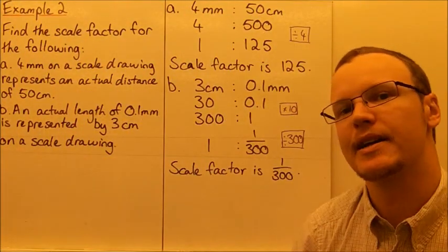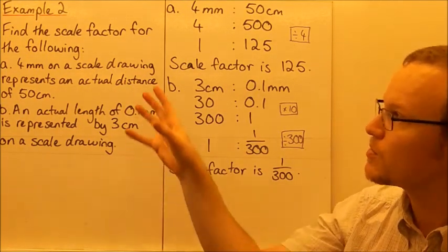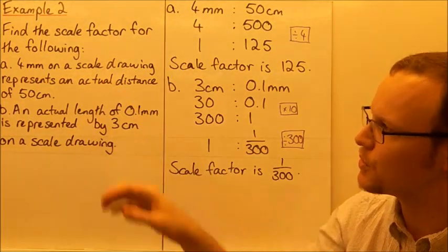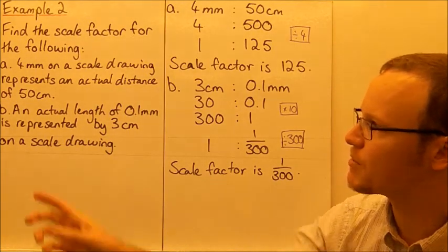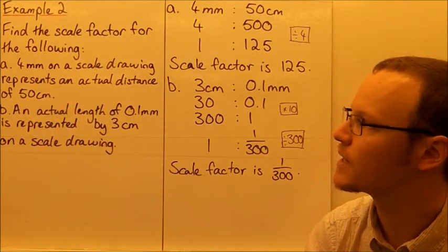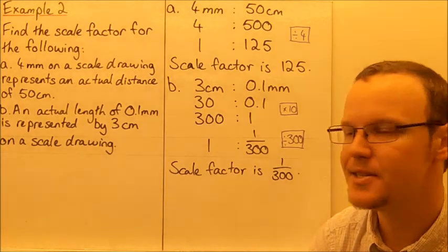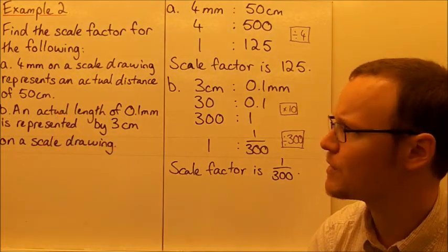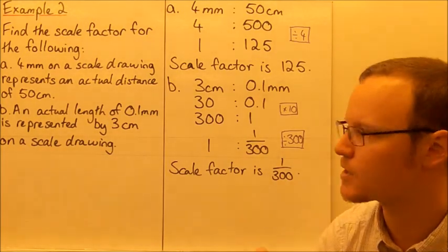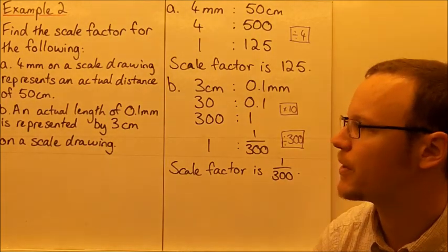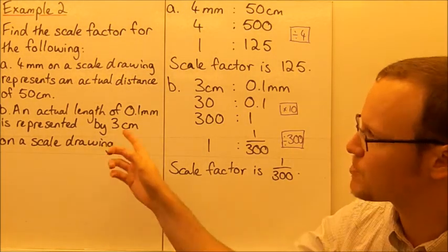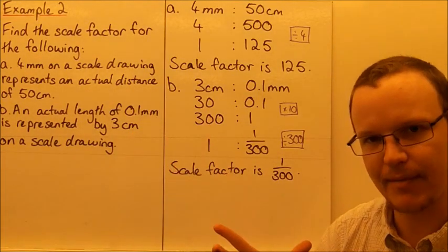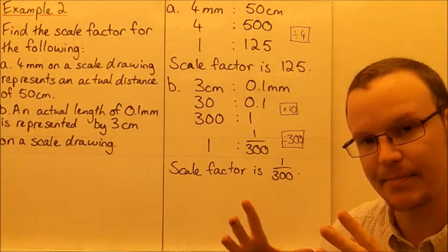Now we're looking at problems where we need to determine the scale factor. We've got 4 millimetres on a scale drawing representing 50 centimetres in real life. In the second problem, an actual length of 0.1 millimetres is represented by 3 centimetres on a scale drawing — so here we're actually increasing the size, blowing up the picture to make it bigger.